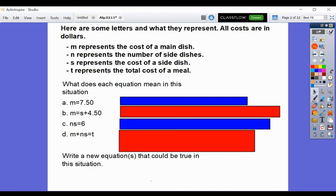All right, today's lesson is Unit 2, Lesson 1. It's starting on page 130. Your warm-up question was: here are some letters and what they represent. All costs are in dollars.